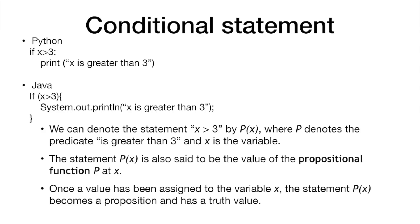This is very important when we are coding, because for statements like this one, we have to assign a value to the variable x in order to know what is inside the block of instructions will be executed. So these conditional statements are basically predicates, and the way the programming language determines whether the condition is true or false is using predicates.